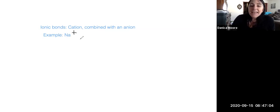So we have our cation and let's say we're hooking it up with an anion. That's a Cl minus. What's this guy's name? Chloride. So we have a sodium ion and a chloride ion.